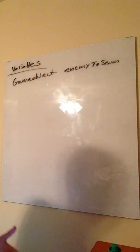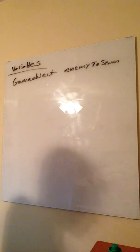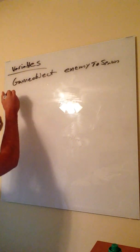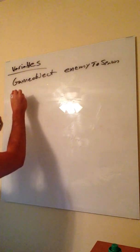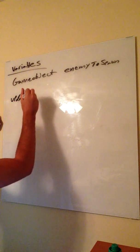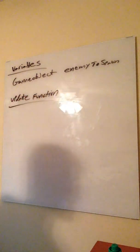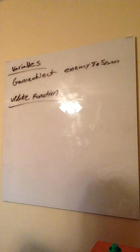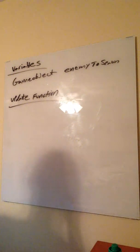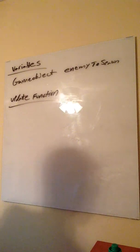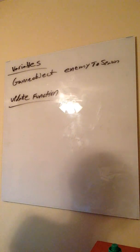So we have our game object variable that's going to describe the enemy game object. Now, in your update function, go ahead and spawn your object. And how do you spawn your object? If you watched my previous tutorials, you know it's instantiate. If you haven't, I suggest going to the Unity 3D Reference, type in instantiate, and look at how to use that method.